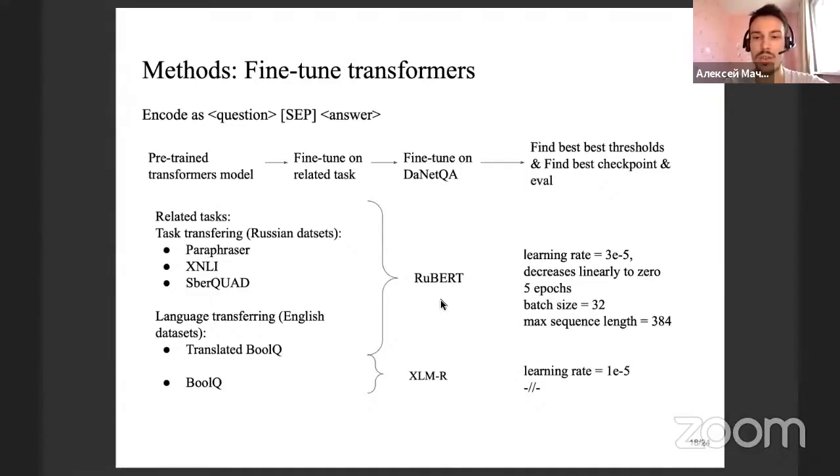Language transferring assumes using the same dataset, like an identical dataset to ours but in a different language. Like BoolQ is an English dataset, and also the task is to answer questions yes or no. For this purpose, we use the BoolQ dataset, which has the same idea and task, but the dataset is in English. We perform two approaches to pre-training on this dataset. For the first, the dataset is translated to Russian with machine translation, and as for all task transferring attempts, we used DeepPavlov's RuBERT. For the second approach, we pre-trained multilingual model XLM-R on the original BoolQ dataset, not translated BoolQ, and then fine-tuned it on our dataset.